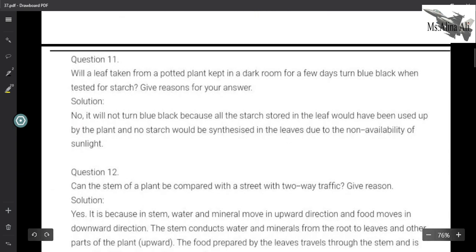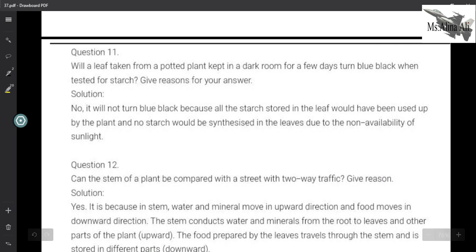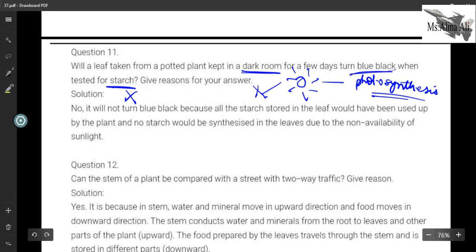Next question: Will a leaf taken from a potted plant kept in a dark room for few days turn blue black when tested for starch? We discussed this in the worksheet question. If you put a plant in a dark room, you remove the sunlight. And sunlight is an essential criteria for photosynthesis. If one of its four characteristics or things you remove, the plant will not prepare food. If it does not make food, there will be no starch and there will be no blue black color.